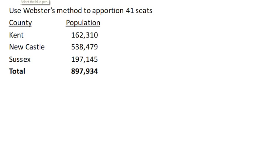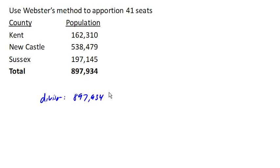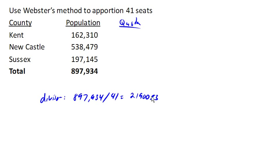So now we're going to use Webster's method to apportion these 41 seats in Delaware. We're going to start out the same way as before. We're going to find our divisor by taking the total population, dividing it by the number of seats to come up with the divisor. And then we're going to divide each population by the divisor to come up with our quota.